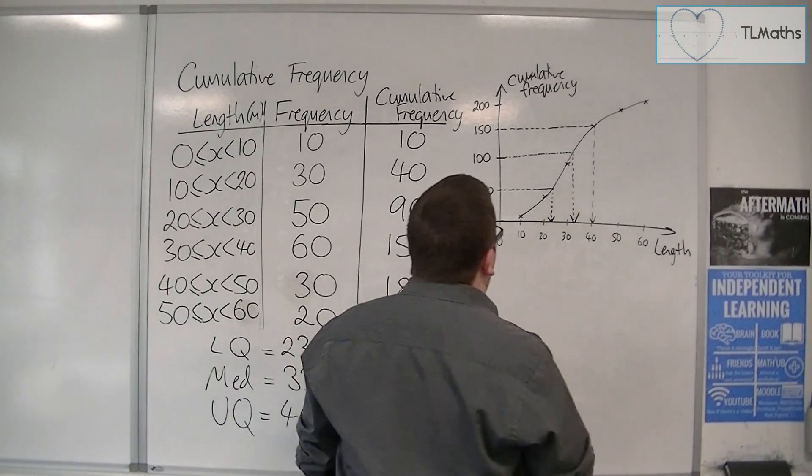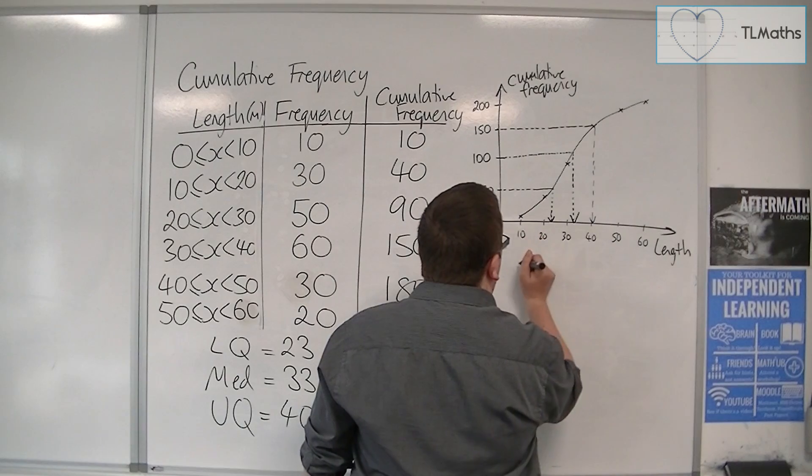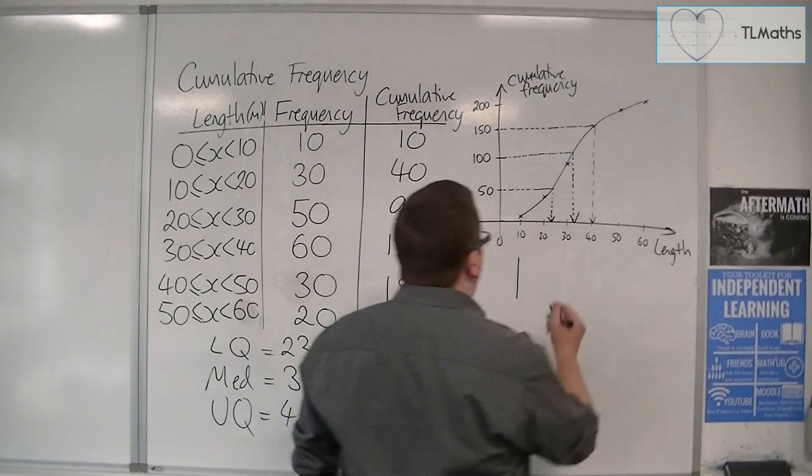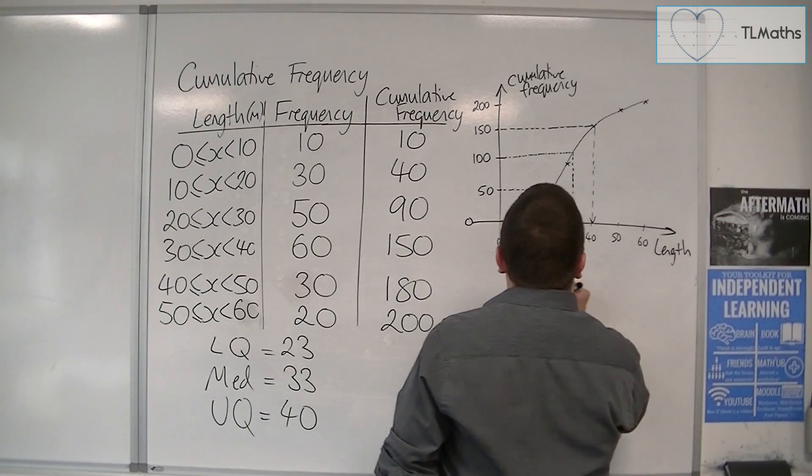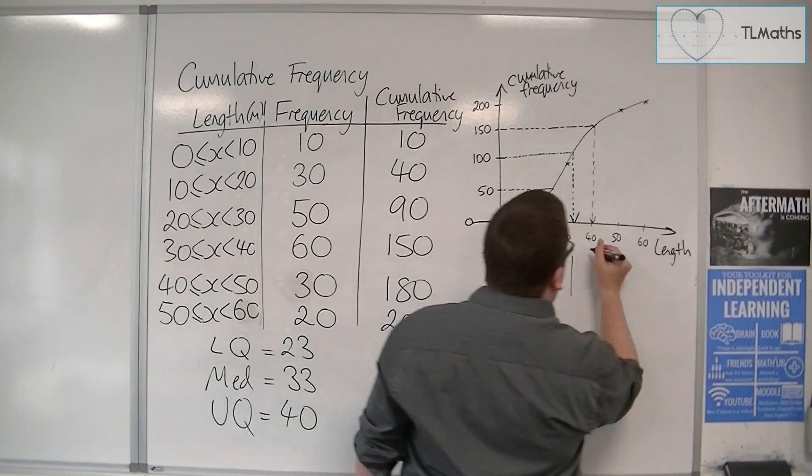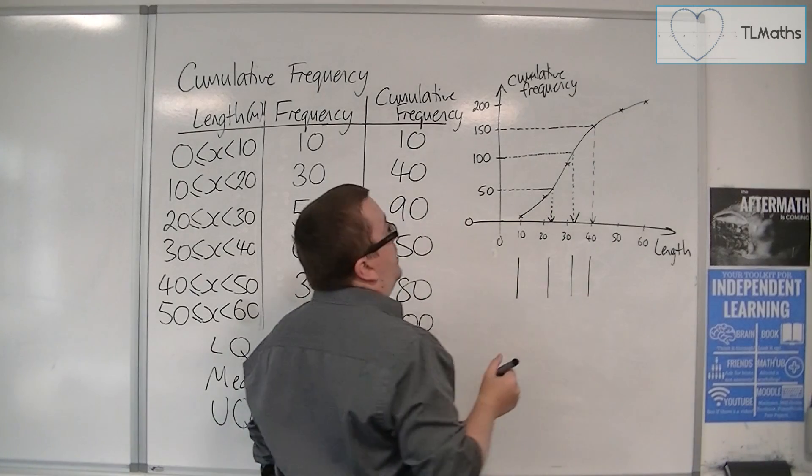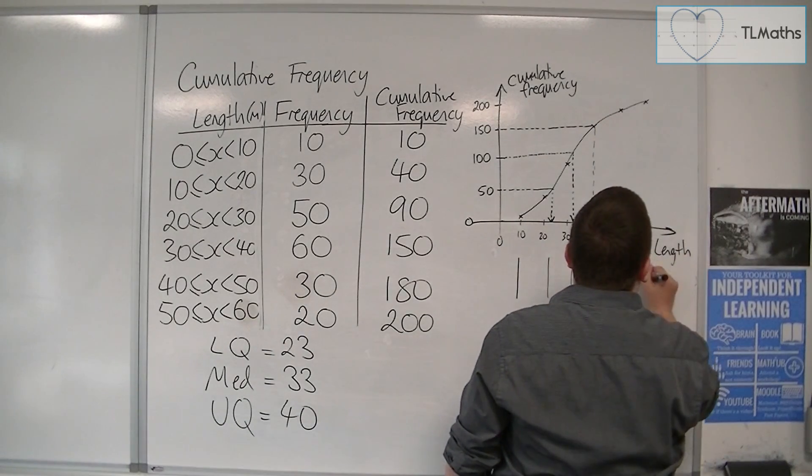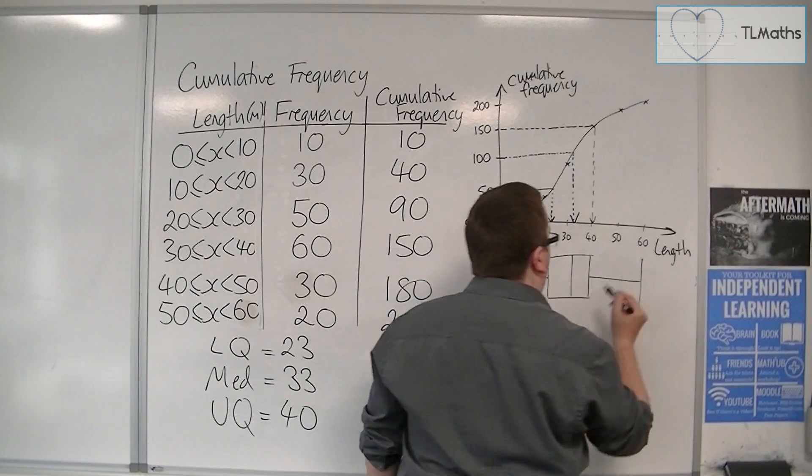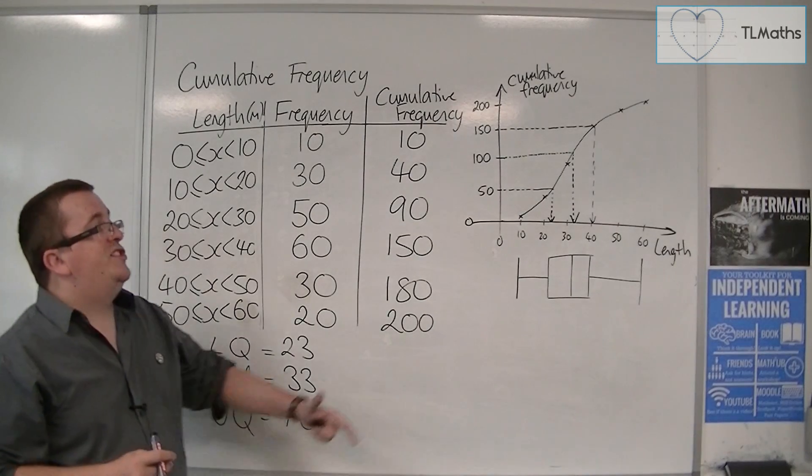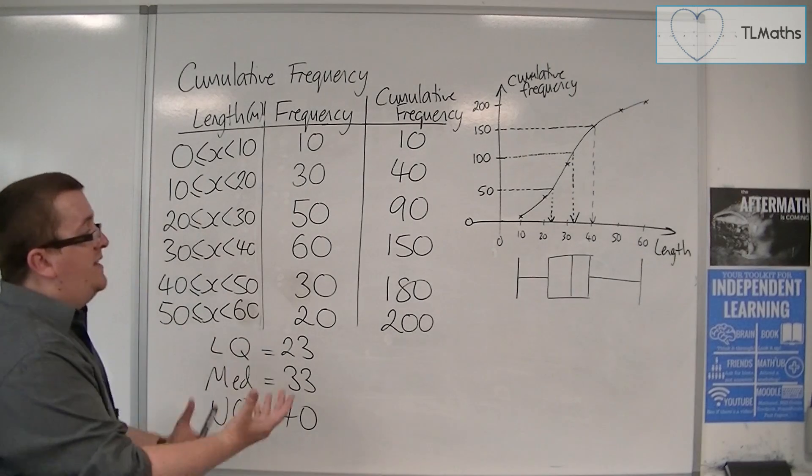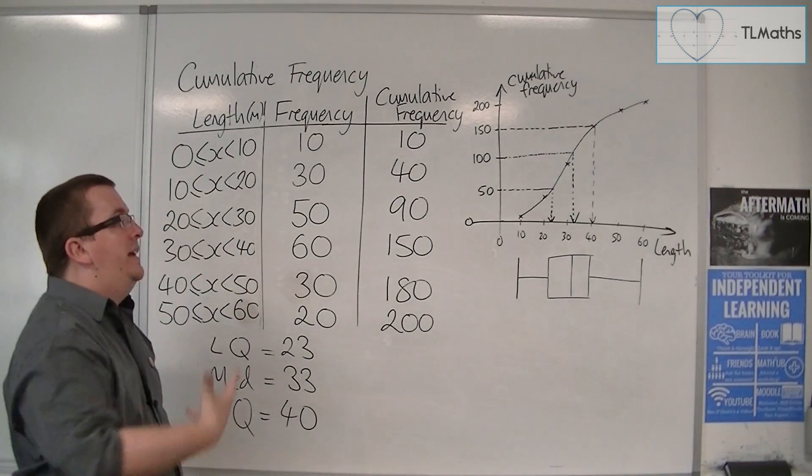And then from that, what you can then say is you could then draw yourself a box-whisker diagram, a box plot that goes with it. So there's your lower quartile, the upper quartile, because that x-axis acts as a natural axis for the box plot itself. And then at 60 for the final one. And there's your box plot.